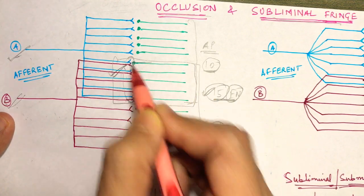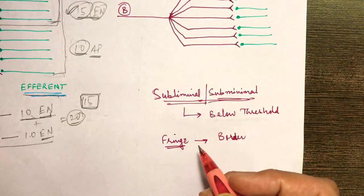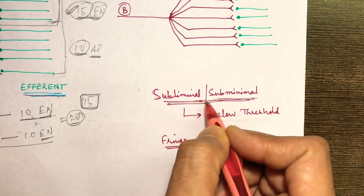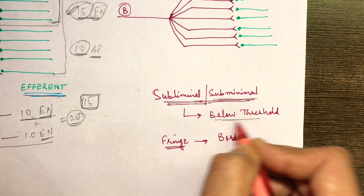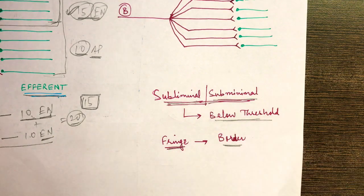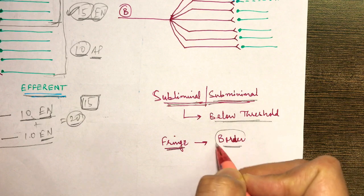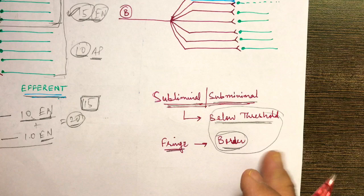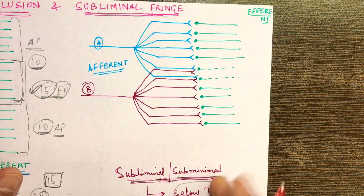Now coming to subliminal fringe. First of all, what is the meaning of this word? Subliminal, or sub-minimal — it sounds a bit like a tongue twister, but both mean the same thing: below threshold. Fringe means border — the ones located at the border or periphery. So subliminal fringe means the border ones have received a below-threshold or sub-threshold stimulus.